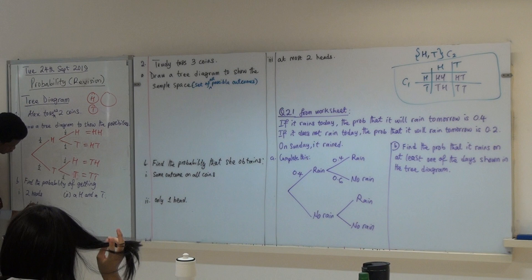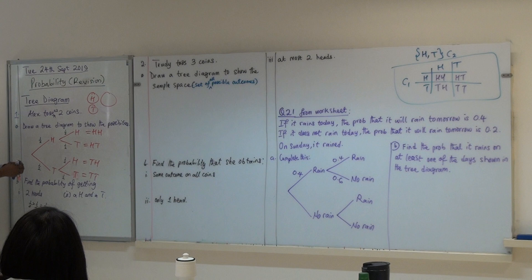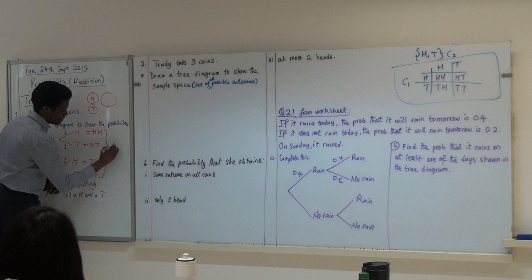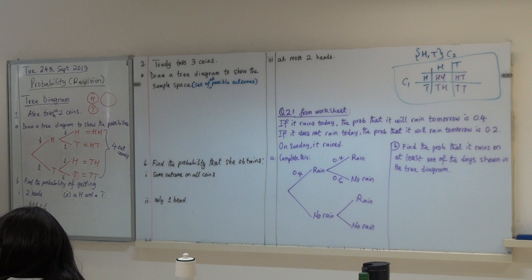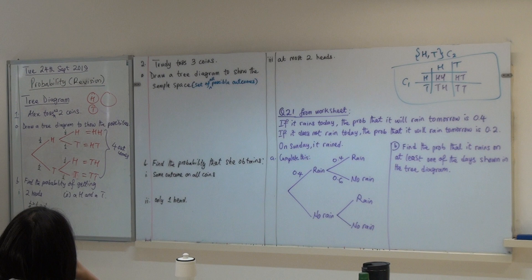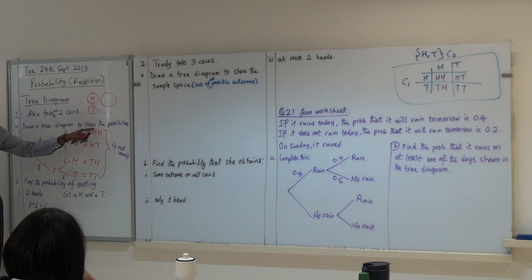So, the probability of getting 2 heads is 1 over 2 times 1 over 2, which is 1 over 4. Another way of looking at it is, look at your sample space. How many outcomes are here? Four. How many of these four outcomes gives you 2 heads? One. So, the probability of getting 2 heads, looking at this sample space is still what? 1 out of 4, which is what you are getting here.